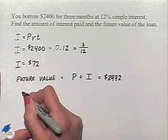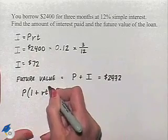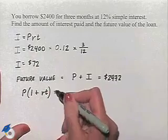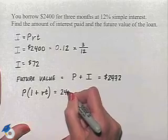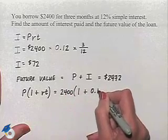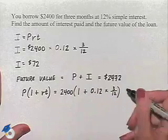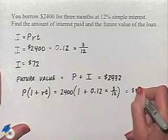We could also find it by looking at the following format, P times 1 plus RT, which is going to be 2,400 times 1 plus our R value times our T value. And calculating that, of course, is going to give us the same result.